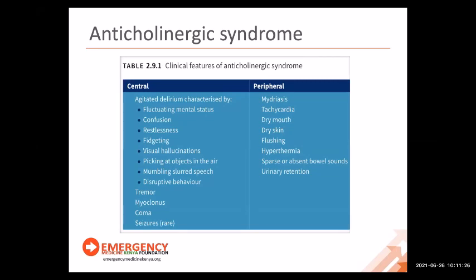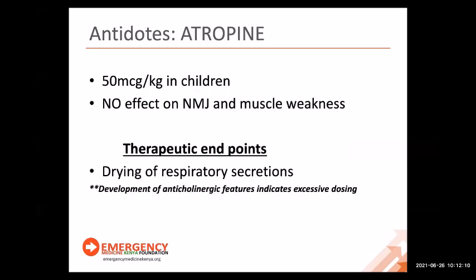The main therapeutic endpoint of atropine is drying of respiratory secretions. Note that patients may develop anticholinergic features indicating excessive dosing: centrally — agitated delirium with fluctuating mental status, confusion, restlessness, fidgeting, visual hallucinations, mumbling or slurred speech, disruptive behavior, tremor, myoclonus, coma, and rarely seizures. Peripherally — mydriasis, tachycardia, dry mouth, dry skin, flushing, hyperthermia, absent bowel sounds, and urinary retention.